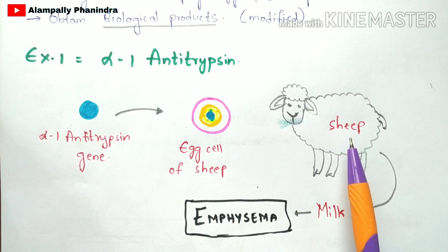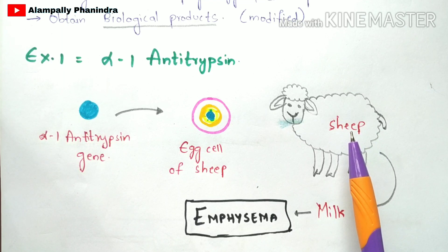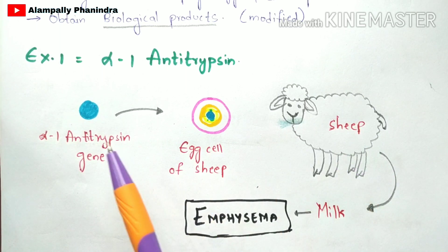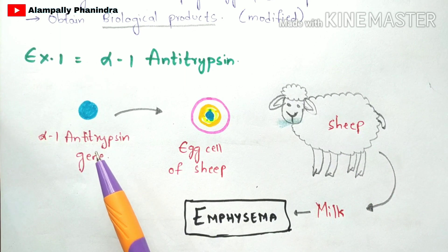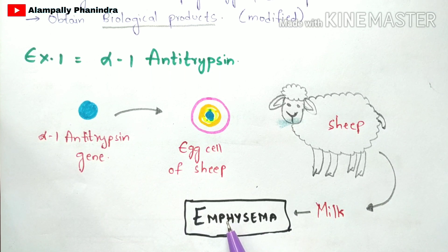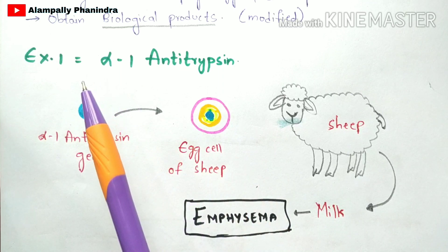The alpha-1 antitrypsin gene introduced into the sheep undergoes transcription and translation to produce proteins. These proteins are secreted in the milk, so the milk contains proteins related to the alpha-1 antitrypsin gene. When this milk is consumed by human beings infected with emphysema, the emphysema disease is easily cured. This is one of the best examples of animal transgenesis done in sheep.